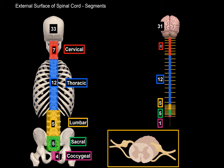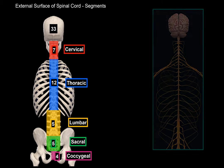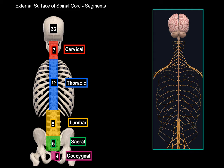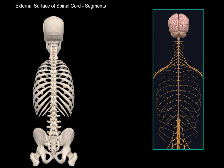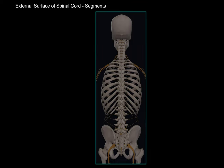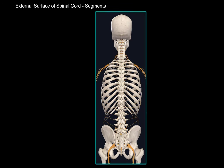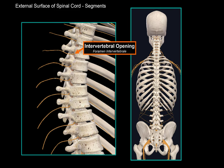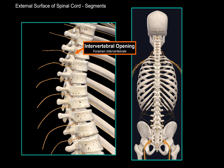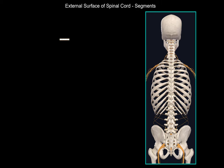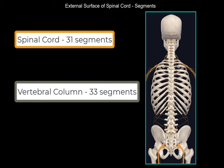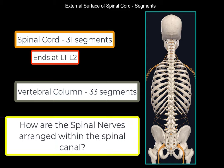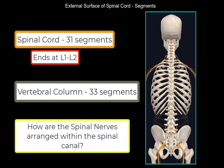So we have 31 of those segments. If we fuse the vertebral column and the spinal cord together, you'll see the spinal nerves going out from the vertebral column through the intervertebral openings, or intervertebral foramina. But if the spinal cord has 31 segments and the vertebral column has 33, and the spinal cord ends at the L1-L2 region, how are the spinal nerves arranged within the vertebral canal?